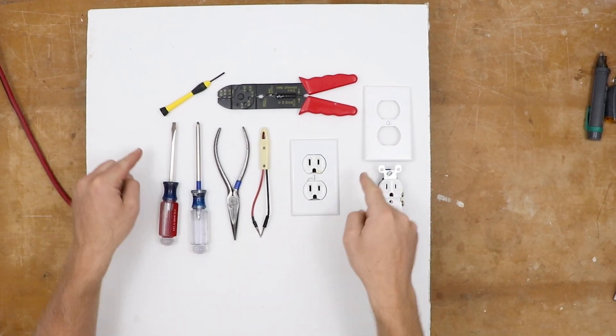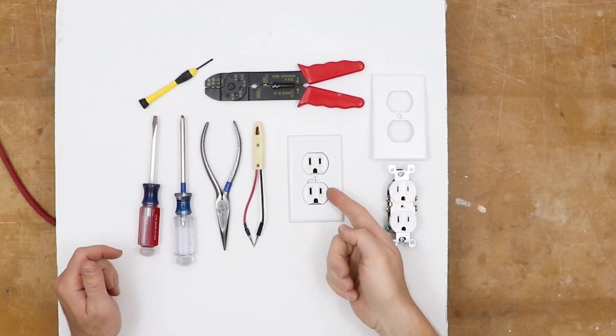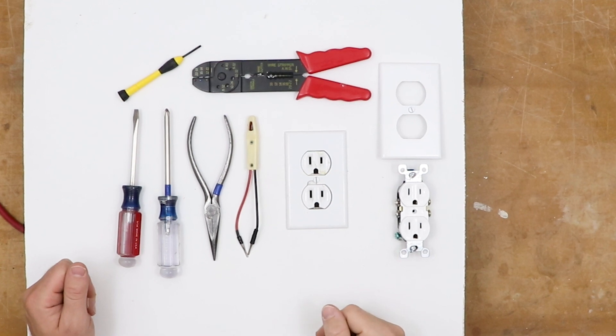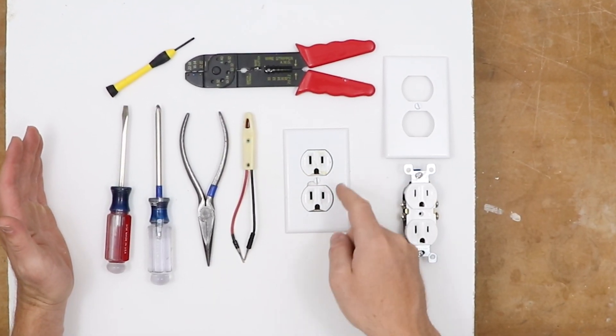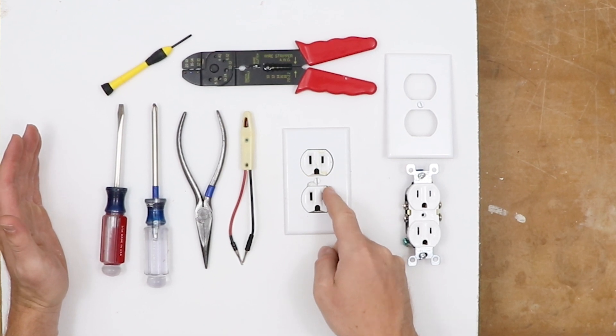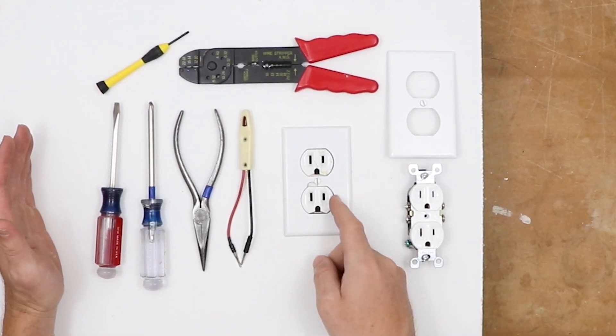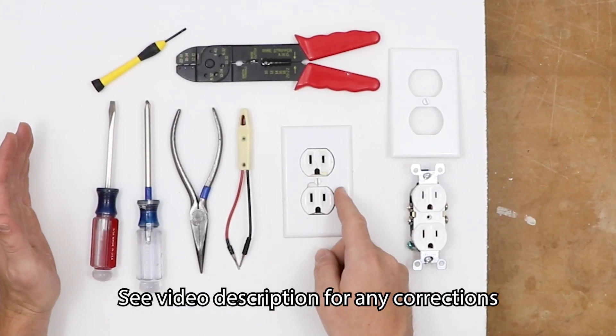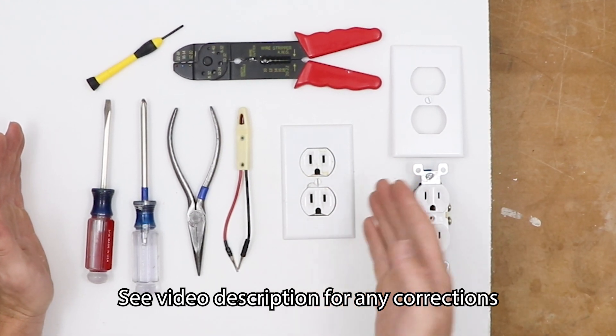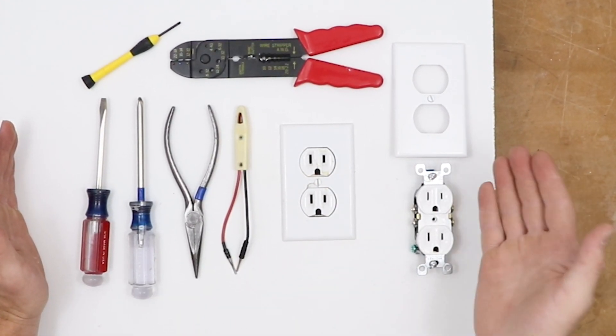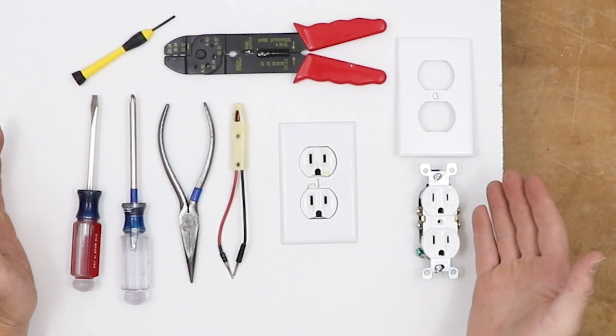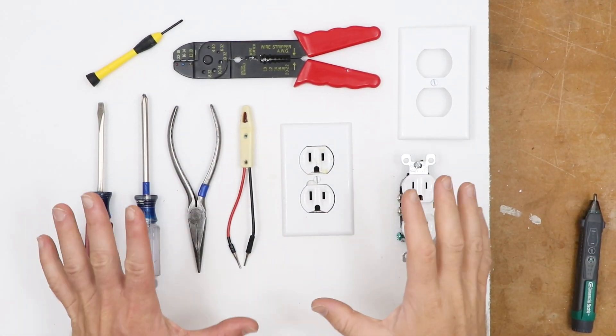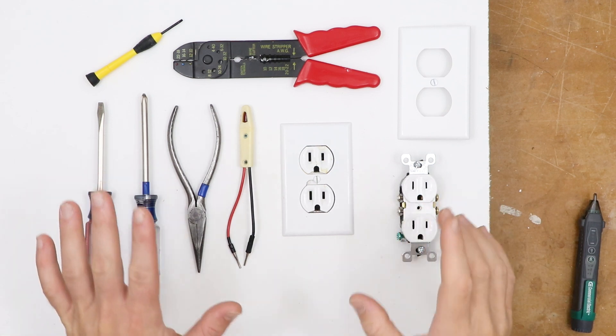Howdy, I'm Nate Large and in this video I'm going to show you how to replace a receptacle. In this demonstration, the receptacle is functioning and providing voltage. If your receptacle is not functioning, replacing it may or may not actually resolve your issue. There could be something else going wrong in the circuit. To replace this receptacle, we're just going to need a few basic tools and supplies.